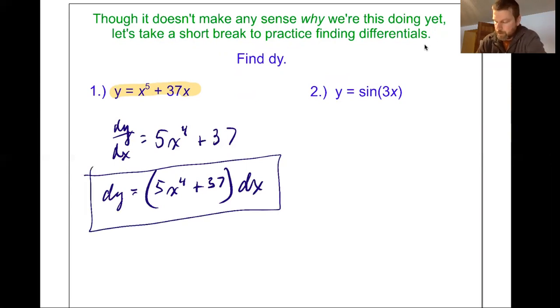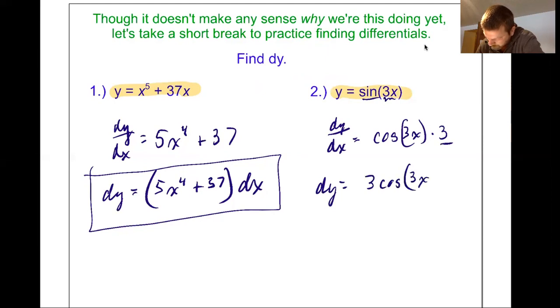All right, you might want to pause the video and try this one. I'm going to do it right now really quick. dy dx is going to be, well the derivative of sine is cosine, so cosine of 3x. Chain rule times the derivative of the inside, so multiply by 3. Get the dy by itself. I like having that constant first, so I would write that this is 3 cosine of 3x, and then multiply by dx.